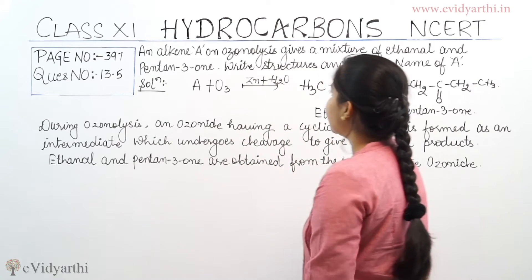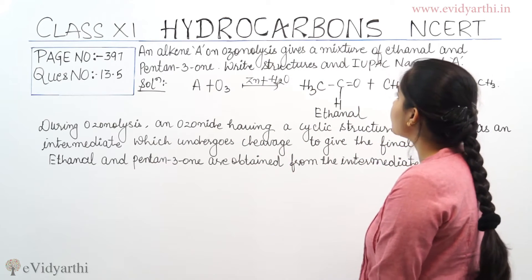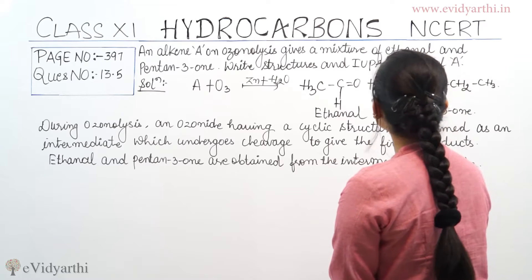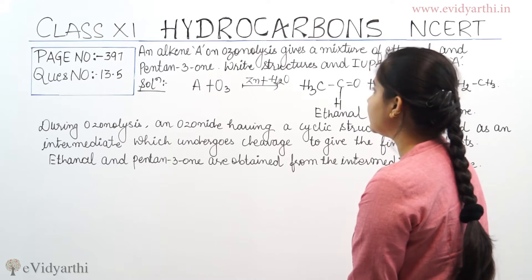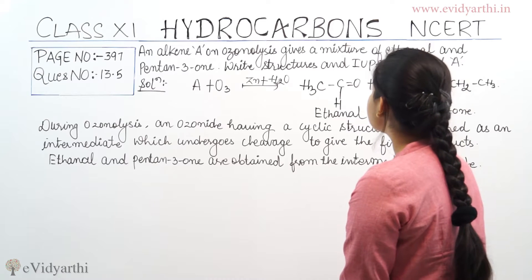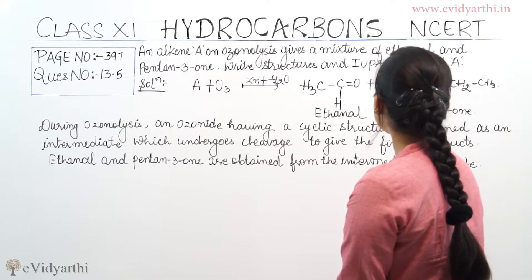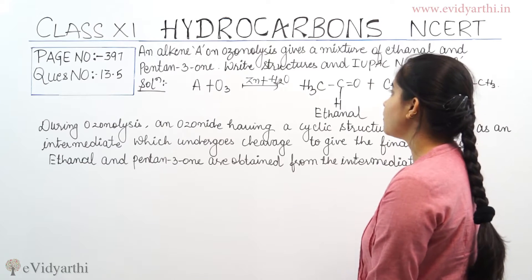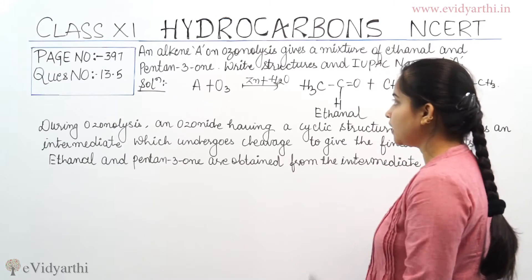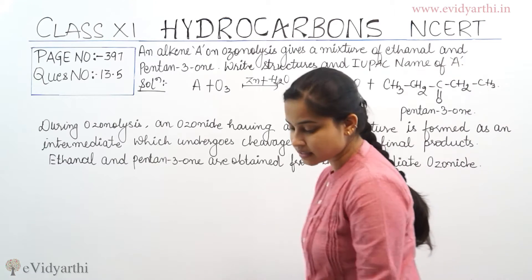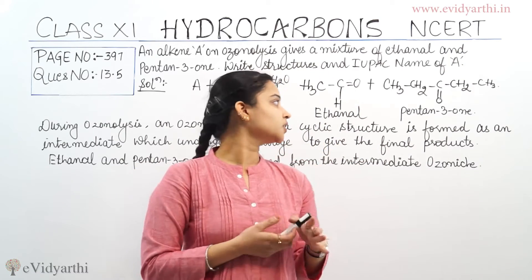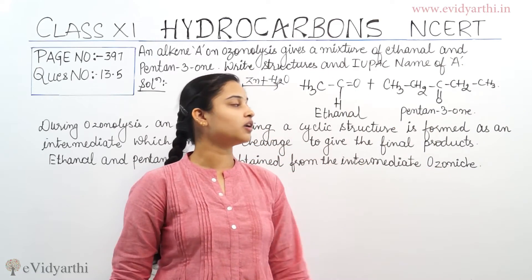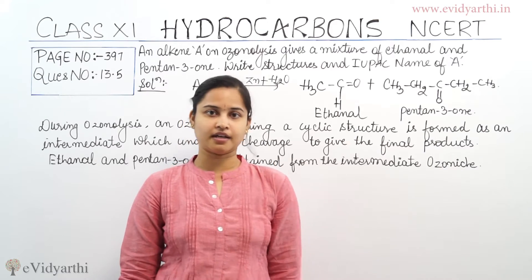The question is: an alkene A on ozonolysis gives a mixture of ethanal and pentan-3-one. Write the structures and IUPAC name of A. So we need to find out the alkene which on ozonolysis gives these two products: ethanal and pentan-3-one.